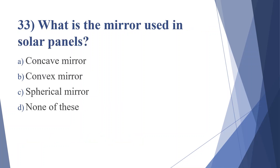Thirty-third question: what type of mirror is used in solar panels? Option A: concave mirror, option B: convex mirror, option C: spherical mirror, option D: none of these. Answer is option A, concave mirror.